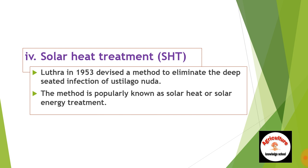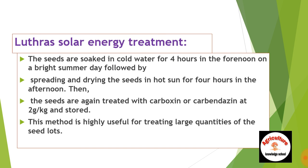This method was used by Lutheran in 1953, who devised a method to eliminate the deep-seated infection of Ustilago nuda tritici. This method is popularly known as solar heat or solar energy treatment. Solar heat treatment was given in 1913 for loose smut of wheat for internally seed-borne infection. The seeds are soaked in cold water for four hours in the forenoon on a bright summer day, followed by spreading and drying the seeds in the hot sun for four hours in the afternoon. The seeds are then treated with Carboxin or Carbendazim at 2 grams per kg.